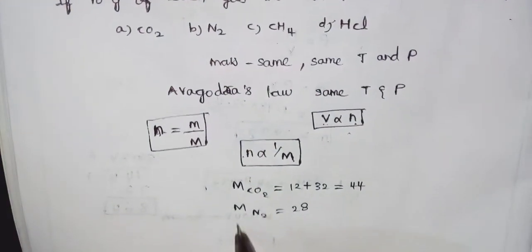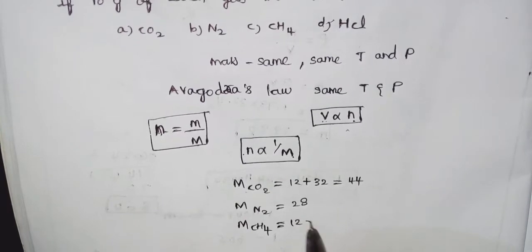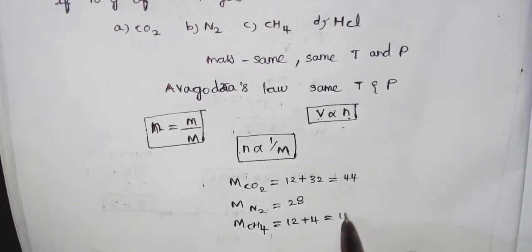Methane, CH4: carbon 12, 4 hydrogen 4, equals 16.